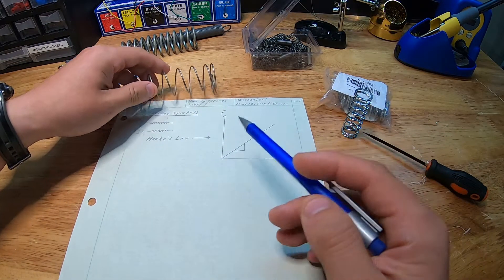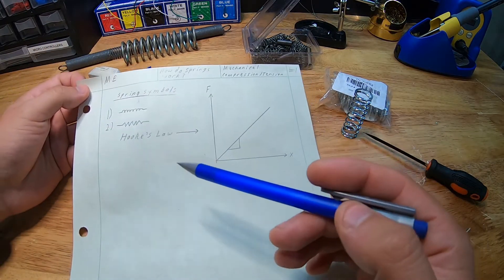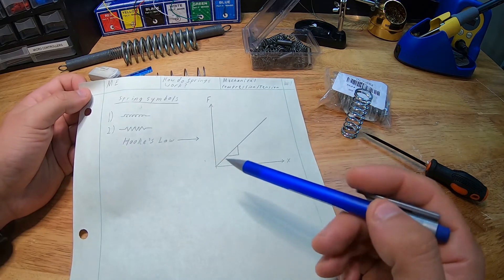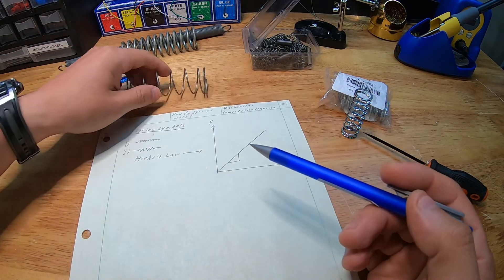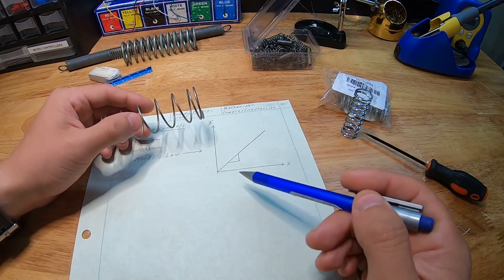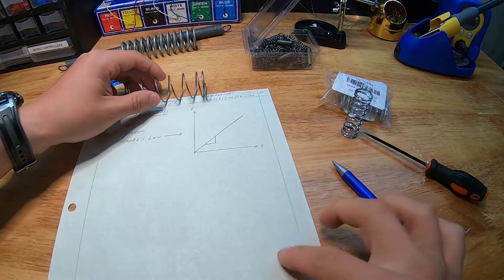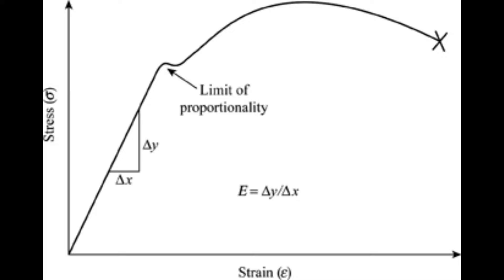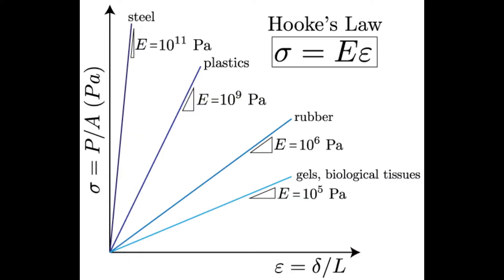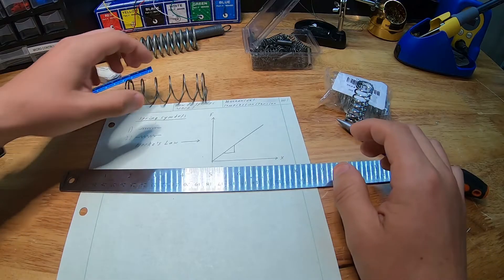So then we arrive at the governing principle for your standard mechanical spring, and that's called Hooke's Law. A quick thing to mention is that there's actually a lot more applications to Hooke's Law than just looking at simple springs. In fact, it's used commonly in material science to describe the elasticity and strain relationships for materials and all kinds of other applications. But that's beyond the scope of this video.